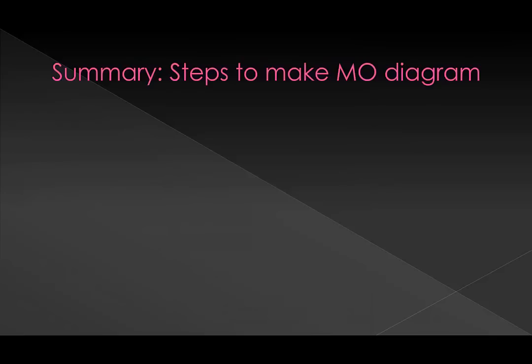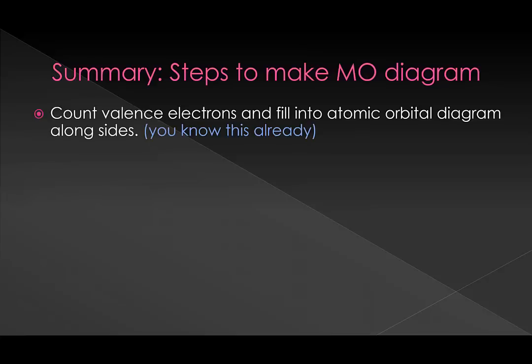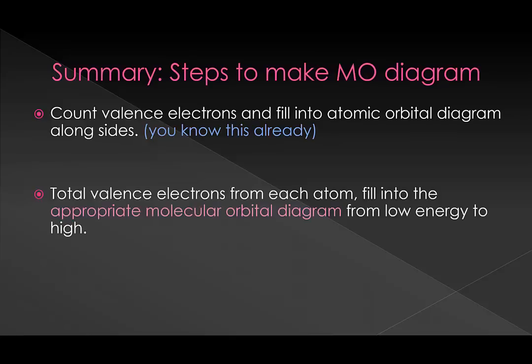Now let's review what we just did. To make an MO diagram, you're going to draw your atomic energy level diagram first and put those along the sides. There's nothing new here, so we didn't really talk about it. We just did it. At this point, you know your total valence electrons from each atom, and you're going to fill into the appropriate molecular orbital diagram from low energy till high.